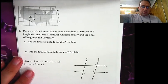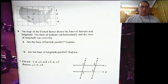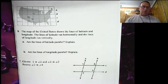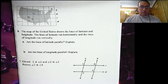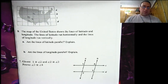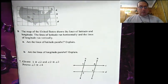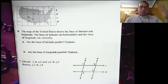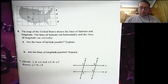So let's flip this over. Here we have a map of the United States showing lines of latitude and longitude. Lines of latitude run horizontally — they're lazy, they're laying down. Lines of longitude are the long ones running vertically from the North Pole to the South Pole.